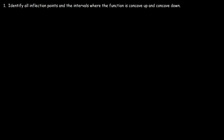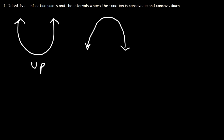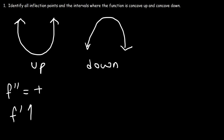Let's talk about concavity first. In this picture, the function is concave up everywhere — that's how it looks. And this is the shape of a graph that's concave down. Whenever the function is concave up, the second derivative is positive, which means that the first derivative is increasing. When it's concave down, the second derivative is negative, which means the first derivative is decreasing.